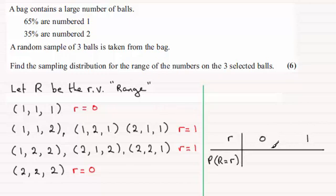I only need to work out one of them, and then I can subtract it from one to get the other one. So let's look at the probability of the range being equal to zero.